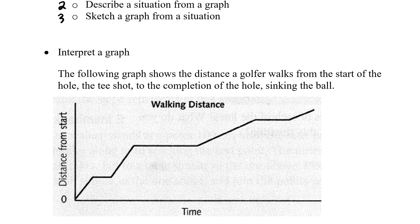Interpreting a Graph. The following graph shows the distance a golfer walks from the start of the hole, the tee shot, to the completion of the hole, sinking the ball. So we make a golf, we're starting with our first shot. We make three, four, five shots, whatever the case may be, and eventually we put the ball into the little hole.